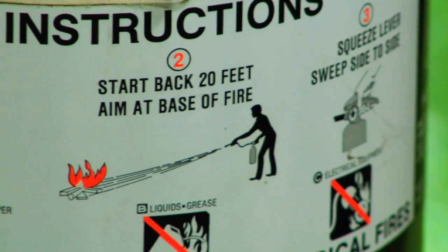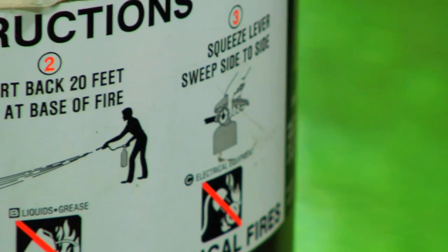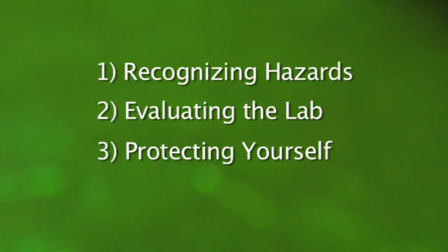This video will identify three critical components to fire and life safety readiness for the laboratory: recognizing hazards, evaluating the laboratory, and protecting yourself.